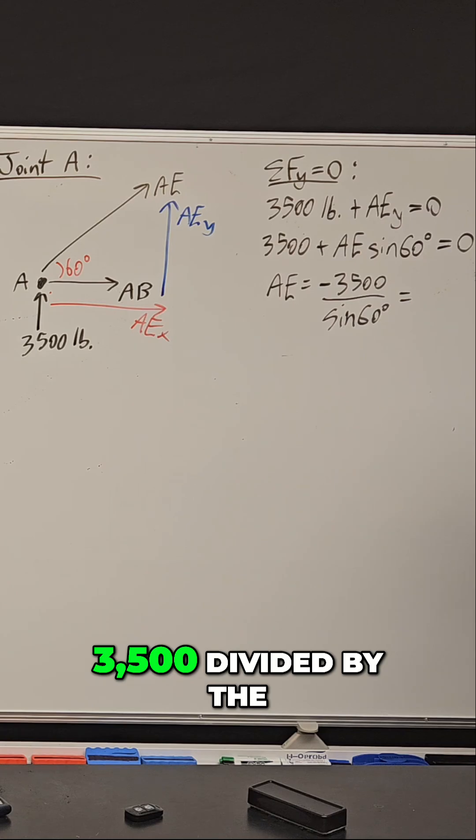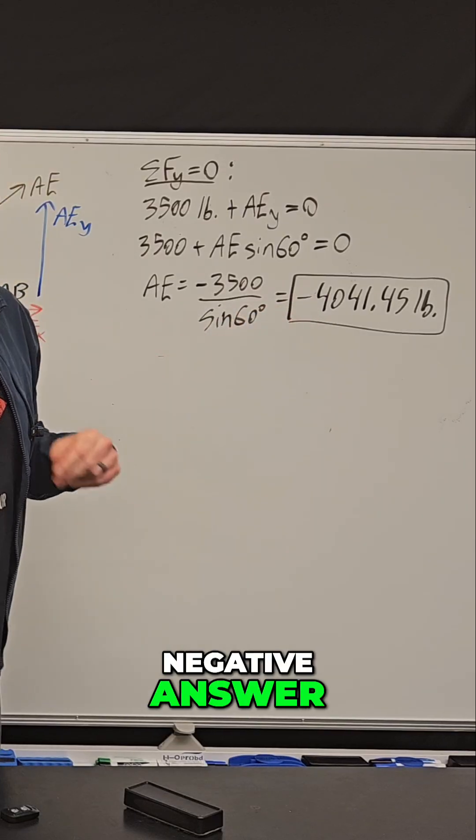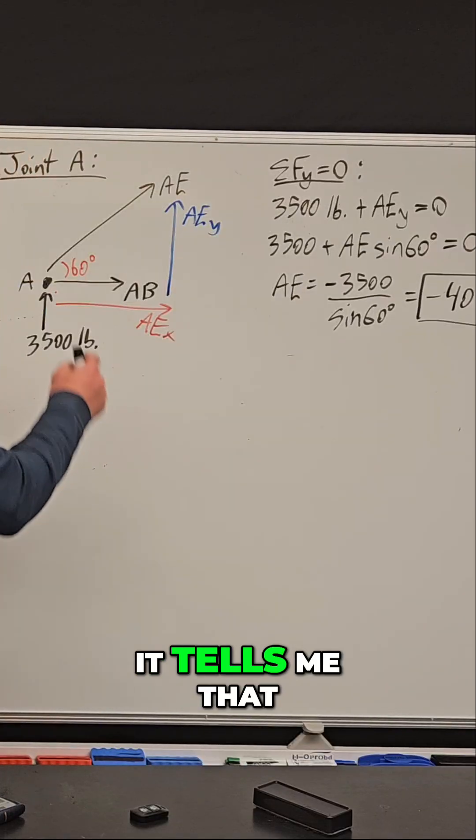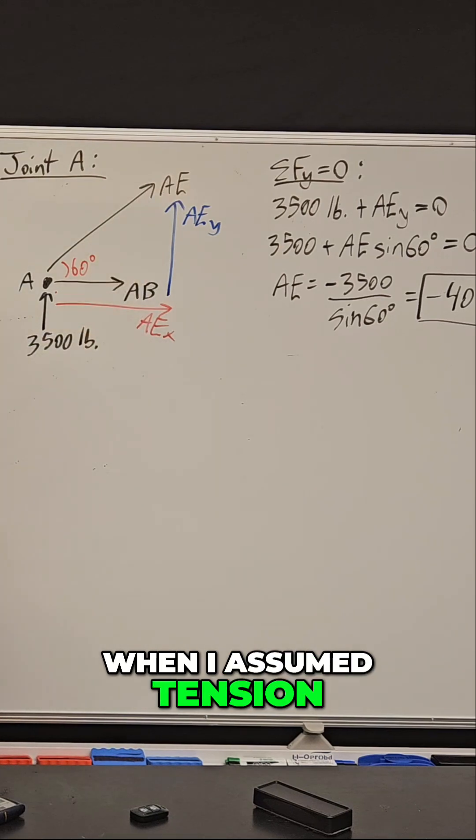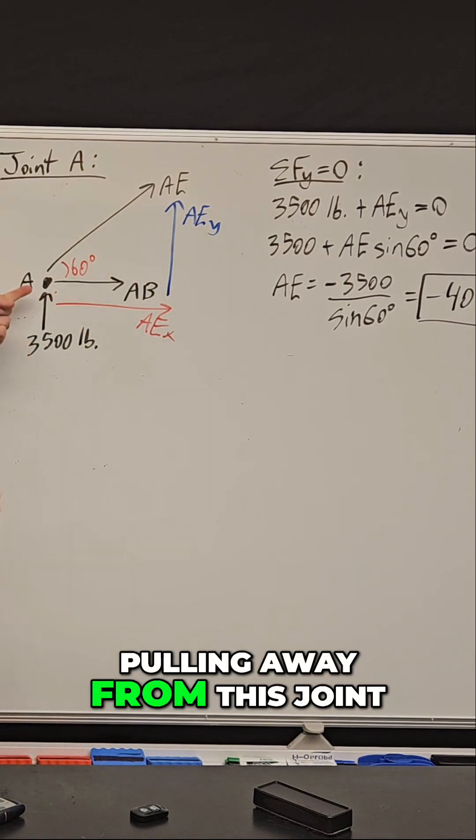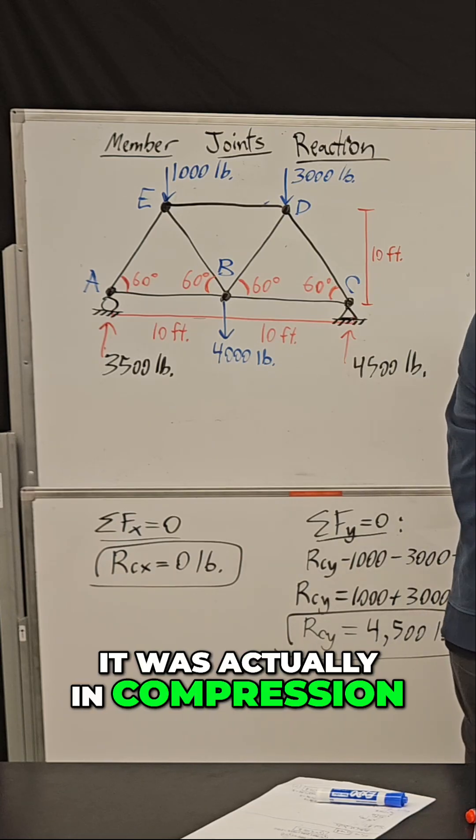So we have negative 3500 divided by the sine of 60. Now I got a negative answer, so what does that tell me? It tells me that when I assumed tension, that this member was pulling away from this joint, I was wrong, and it was actually in compression.